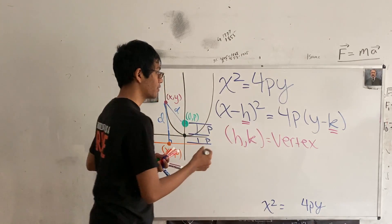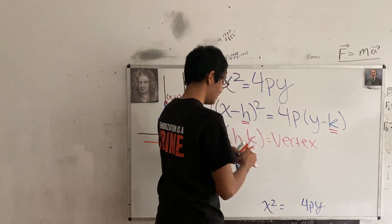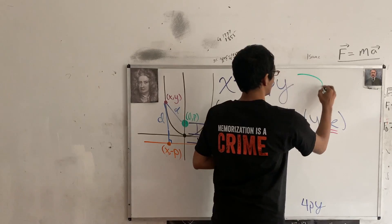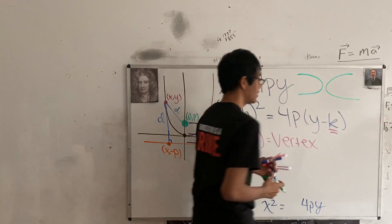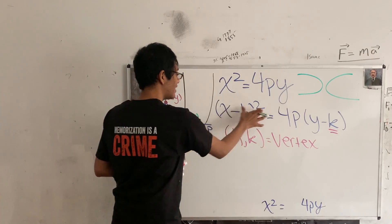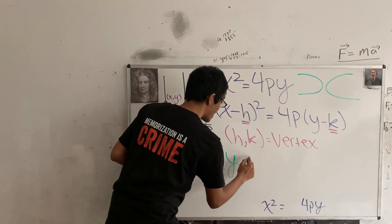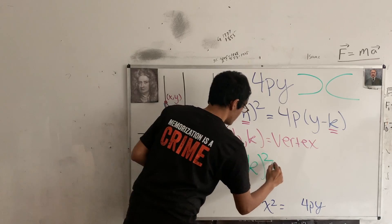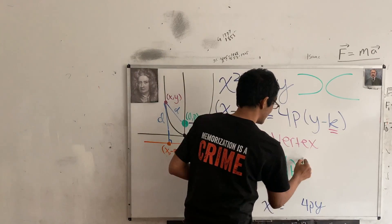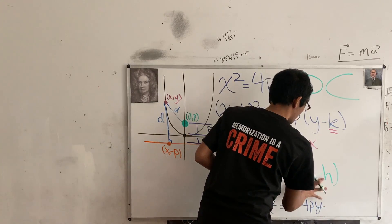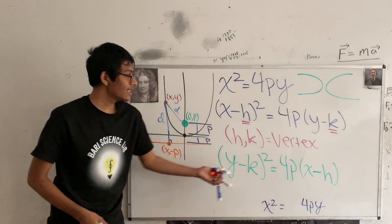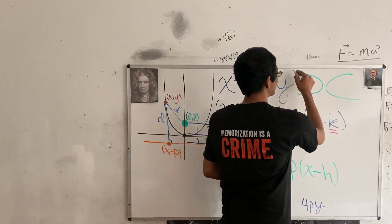That formula is for an up or down parabola. If you have a left or right parabola instead, you adjust the equation slightly: instead of x minus h squared, you use y minus k squared equals 4p times x minus h. You just switch the terms around, and that gives the equation for a horizontal parabola.